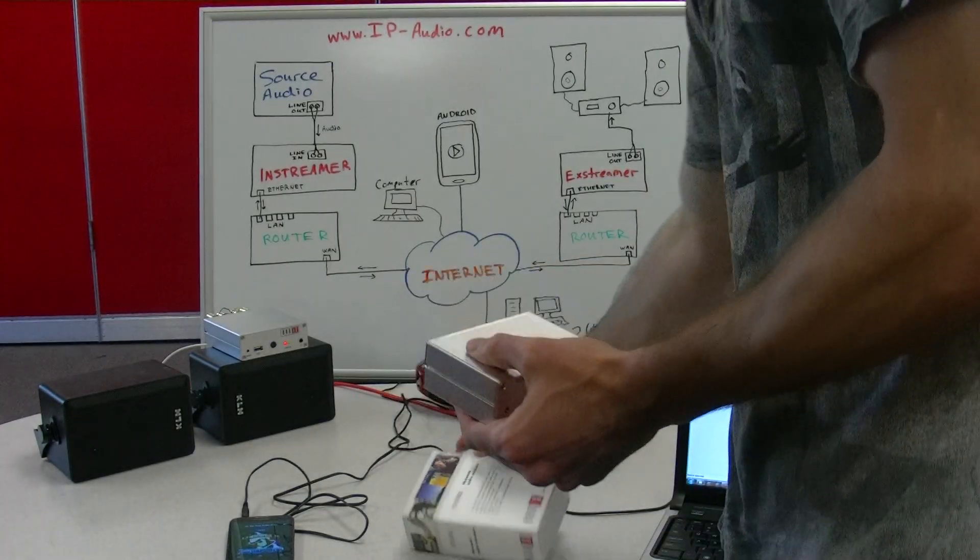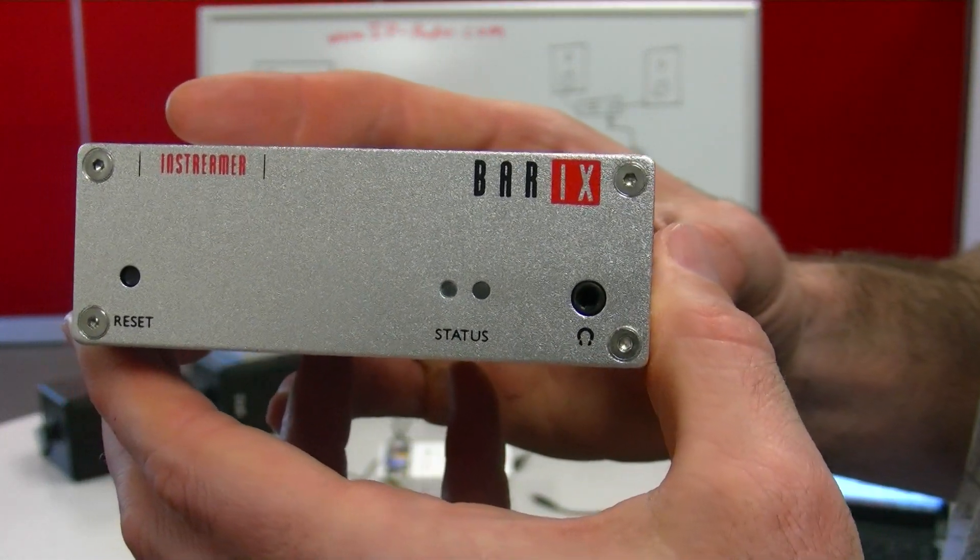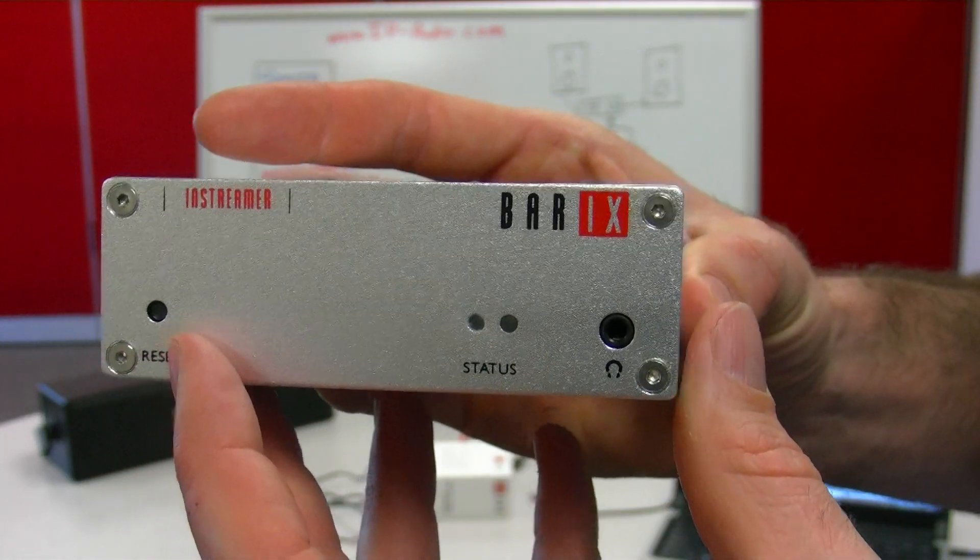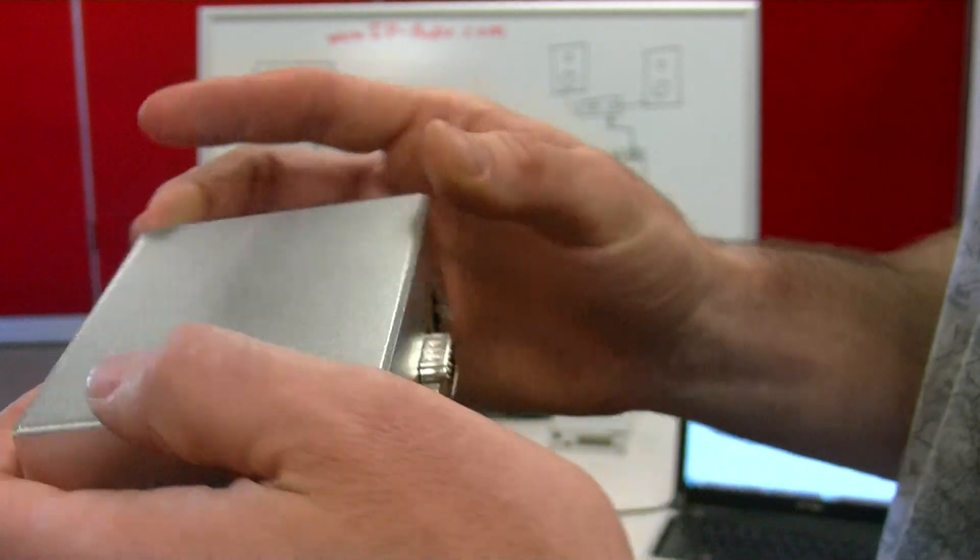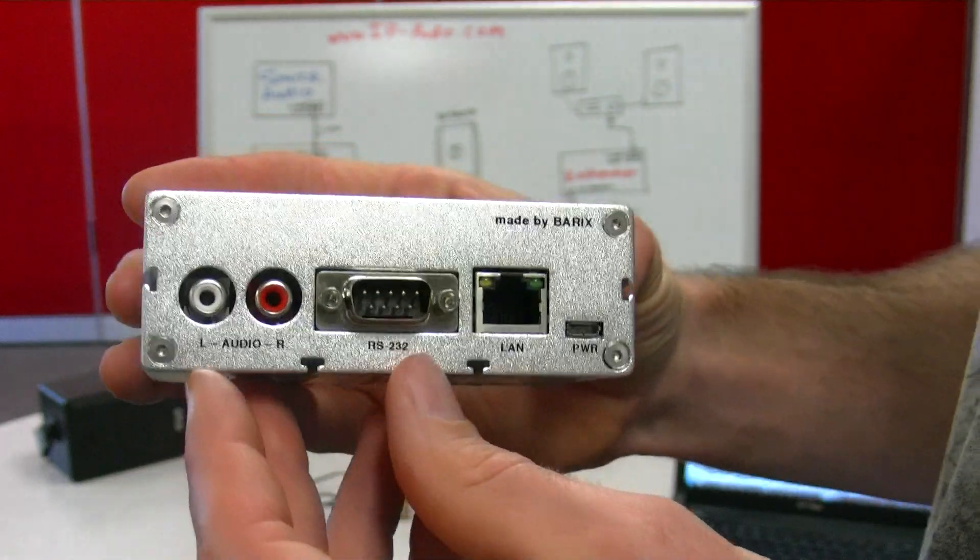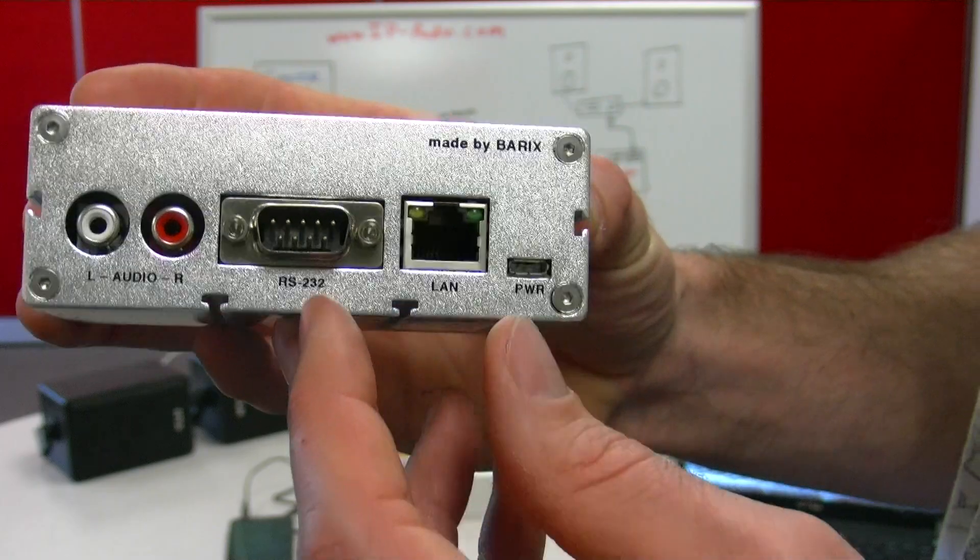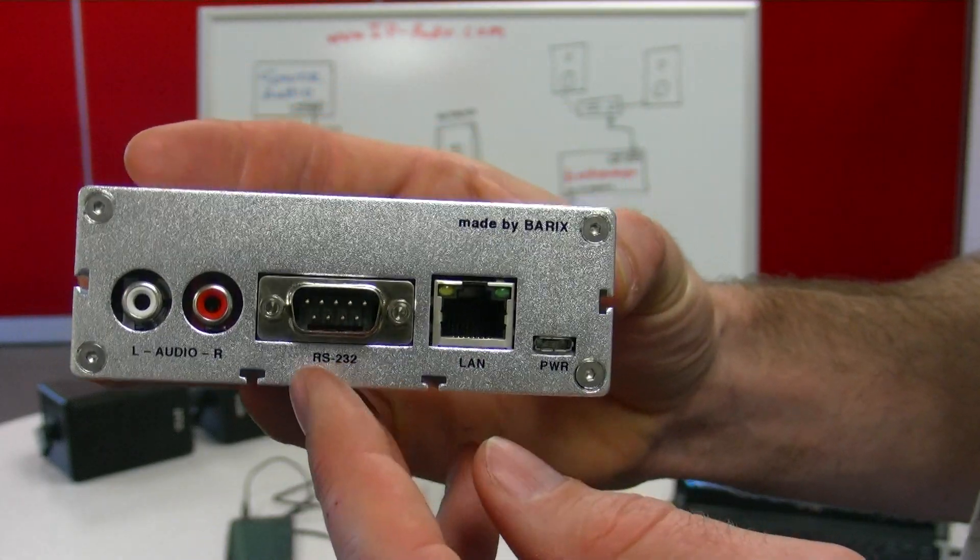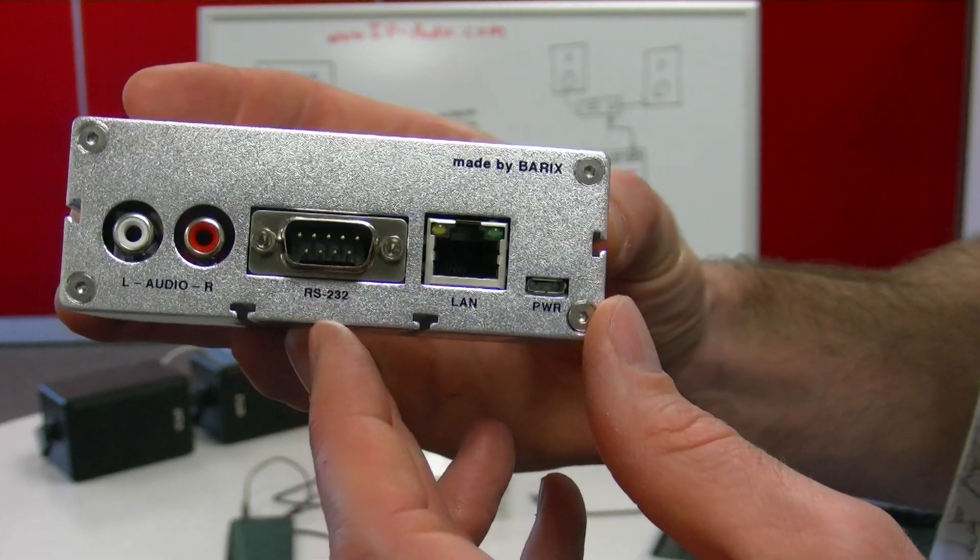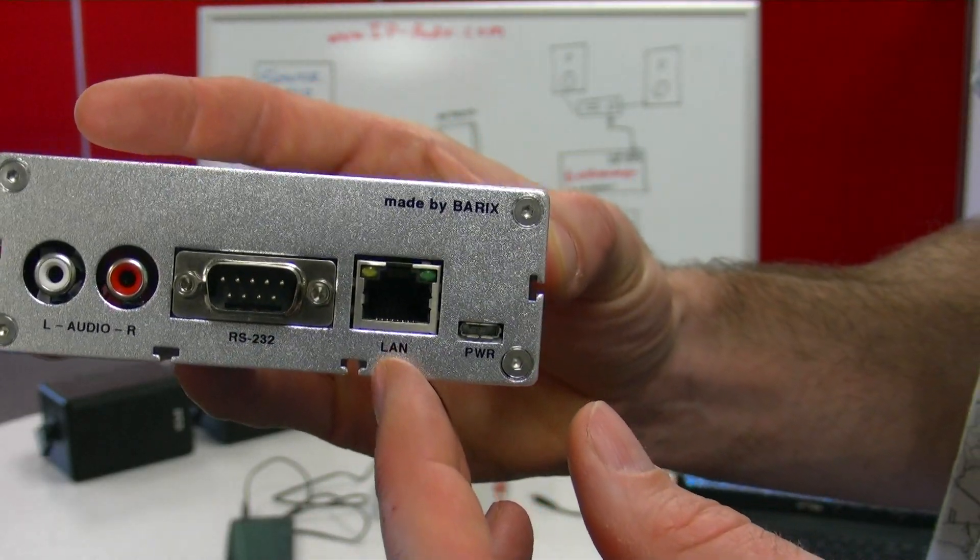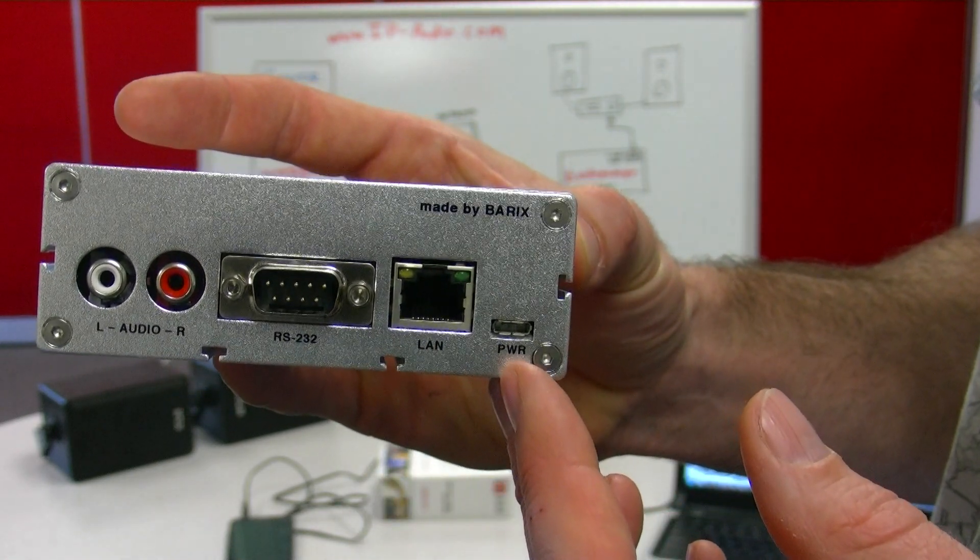The product itself looks like this. This is the front of the In-Streamer. It's got a reset button, some status LEDs, and a headphone output. It's got the RCA line inputs where you send the audio into the device, an RS232 DB9 connector here. This device can also send serial streams over the network as well as audio streams. And it's got the Ethernet jack here to connect to the network, and then it's got a micro USB power socket.